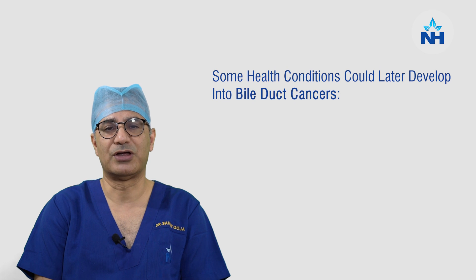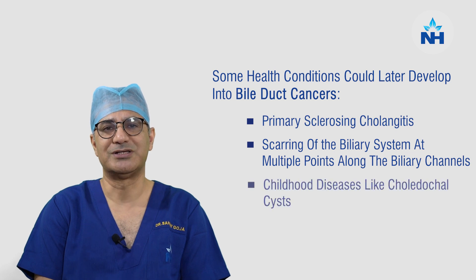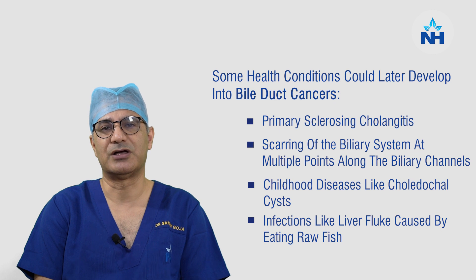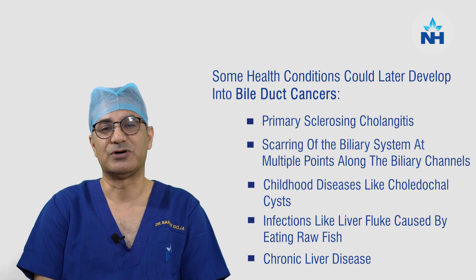There are some conditions like primary sclerosing cholangitis, where there is scarring in the biliary system at multiple points along the biliary channels, that can later lead to development of bile duct cancers. There are childhood diseases like choledochal cyst which, in later age, can lead to development of cholangiocarcinoma. Some infections, especially in East Asian countries — by eating raw fish, one can get liver flukes — and long-term liver fluke infection can lead to development of bile duct cancers.